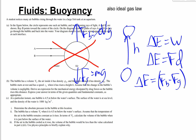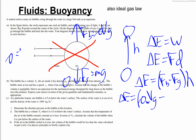The buoyant force is larger, so the bubble floats up. Delta E equals (rho_water·v·g minus rho_air·v·g) times h. We don't have the mass of the air directly, but density equals mass over volume, so mass equals density times volume, giving rho_air·v·g. Multiplying by h gives us the total energy change.